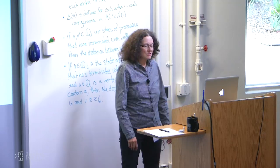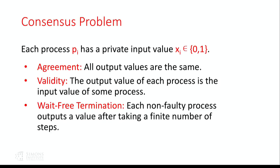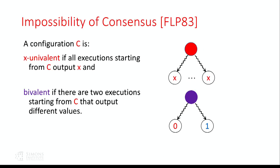The consensus problem is one of the most studied problems of theory of distributed computing. In this problem, every process p_i has a private input value x_i. Each process that doesn't crash must output a value after taking a finite number of steps — that's called wait-free termination. These values must satisfy two properties: agreement, meaning all output values are the same, and validity, meaning the output value of each process is the input value of some process. You can't just always decide 0 to trivially achieve agreement.